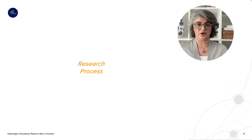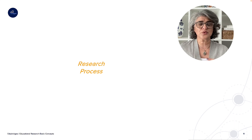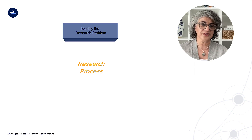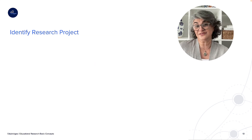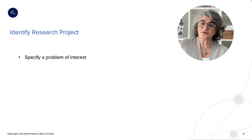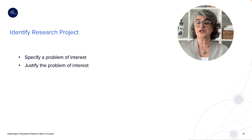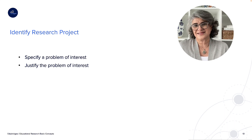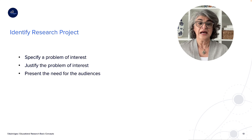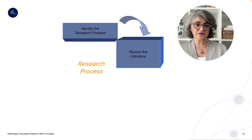So what is the systematic process? The next few slides briefly present what this means. First, we need to identify the research problem. That research problem is always of relevance or interest to us as researchers, or to our context within the community or society we're working with. We need to specify the problem of interest and justify it — because it's meaningless if it's only of interest to me personally. When doing educational research, I need to justify it and present the need for my audience.